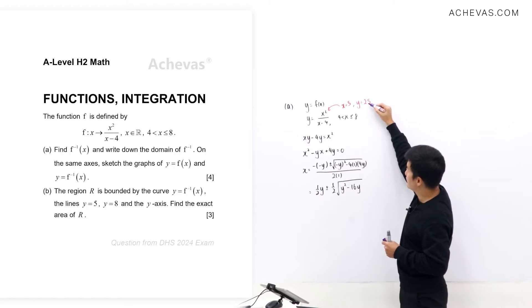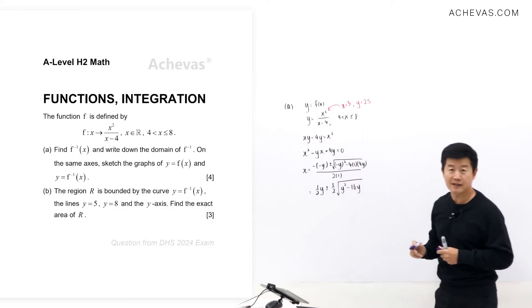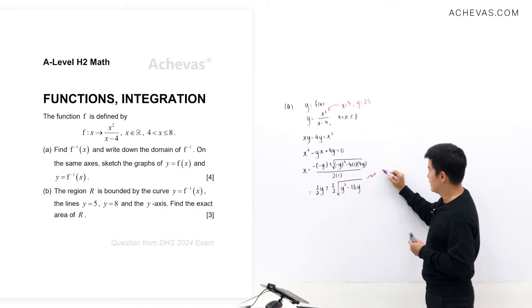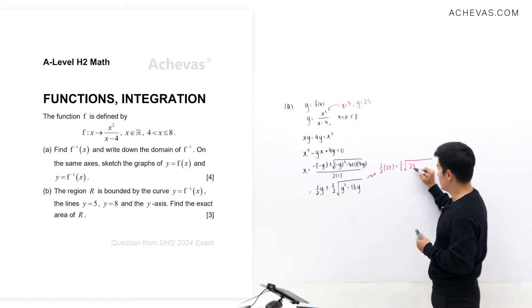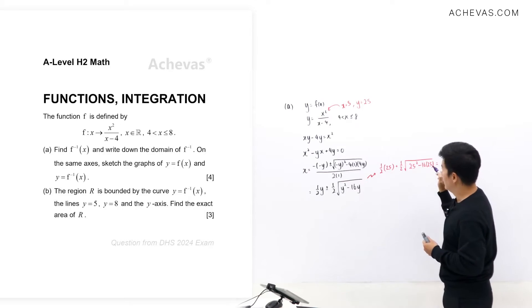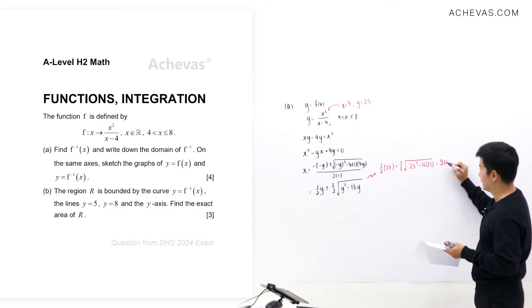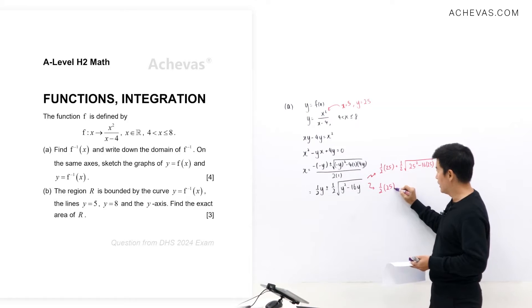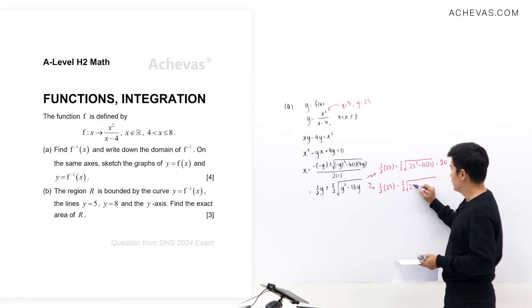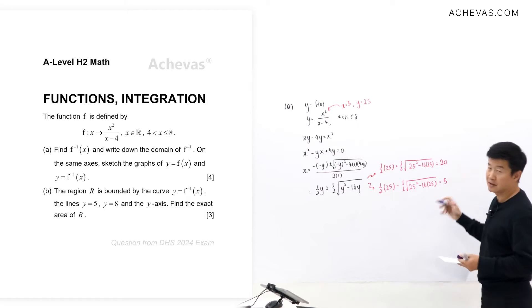Based on y = 25, I test both versions. Using the plus sign: ½(25) + ½√(25² - 16×25) gives 20, not 5. Using the minus sign: ½(25) - ½√(25² - 16×25) gives 5, which is correct.